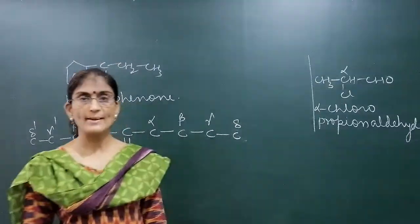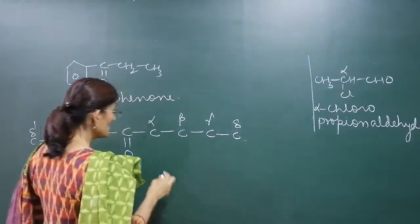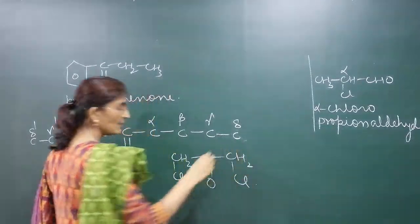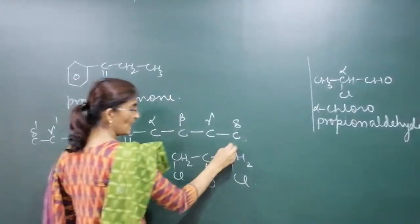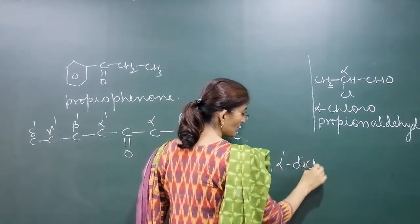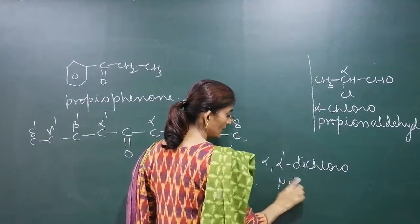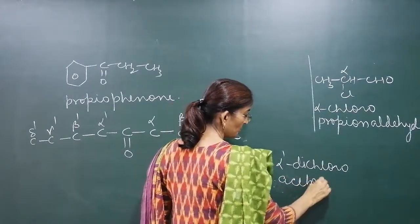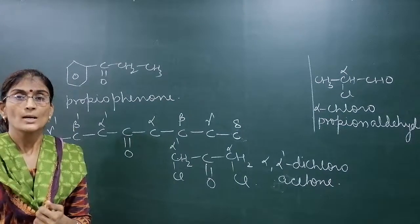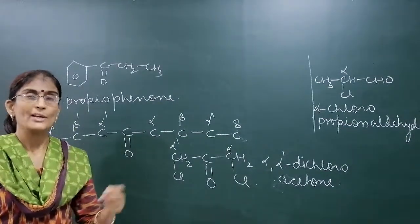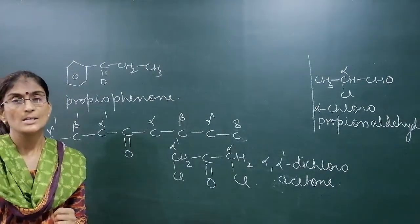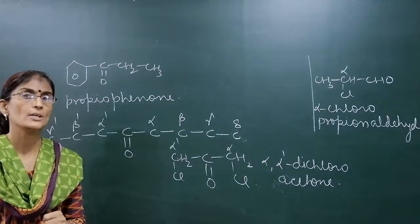Both sides of the C=O group can be labelled: one carbon adjacent to C=O is alpha, the other side is alpha-prime (α'). Their neighbouring carbons are beta and beta-prime respectively, and so on with gamma and delta. For example, if we have ClCH₂–C(=O)–CH₂Cl, both chloro groups are at alpha and alpha-prime positions, so the name is alpha,alpha'-dichloropropanone (acetone).